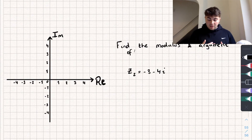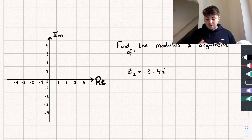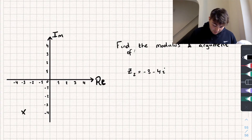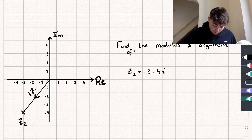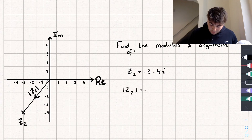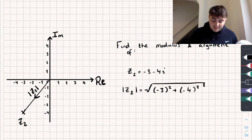Let's now look at a different example where we've got to find the modulus and argument of z2, which is negative 3 subtract 4i. Let me first map that on — that's going to be here on our Argand diagram. The length of this vector is going to be my modulus of z2. That's going to be the square root of negative 3 squared plus negative 4 squared, which is the exact same as the above example, and so it's going to be 5.